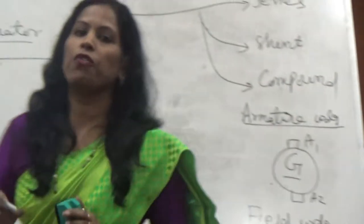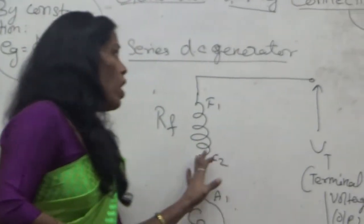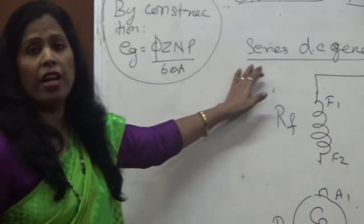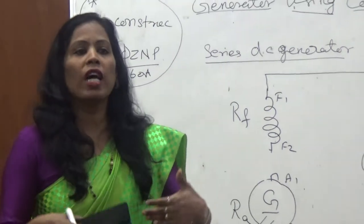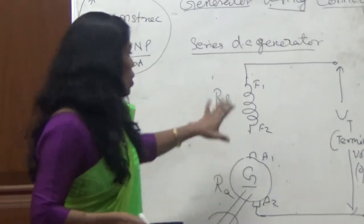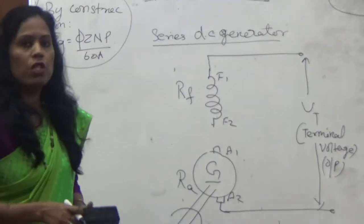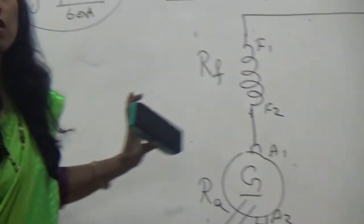By using this, we are going to find a connection diagram. Now we are going to see the series DC generator. In series generator, armature winding and field winding both are going to be connected in series. This is field winding, this is armature winding, and now these two are connected in series.